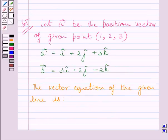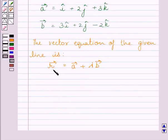Using the key idea, we get the vector equation of the given line is r vector equals a vector plus lambda multiplied by b vector. Here, r vector is the position vector of an arbitrary point p on the line.